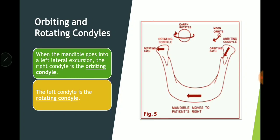The rotating condyle is named based on where the mandible moves. If the mandible moves to the right side, the rotating condyle is the right side. In the picture shown, the patient is moving to the right side, so the right condyle is the rotating condyle. The right side is rotating, and the left side is the other condyle.